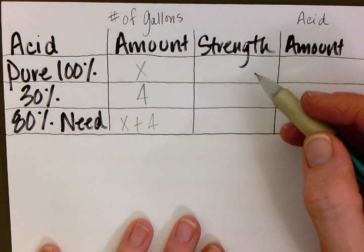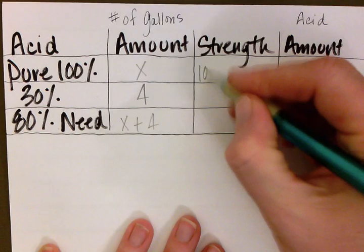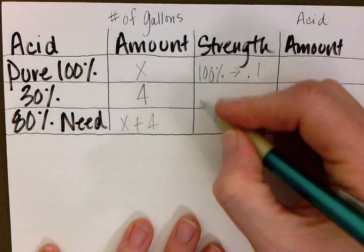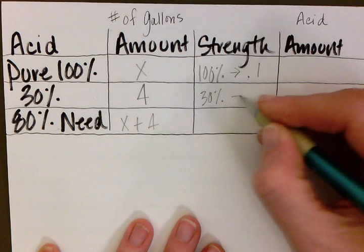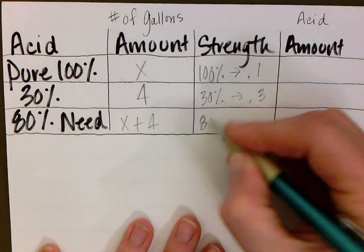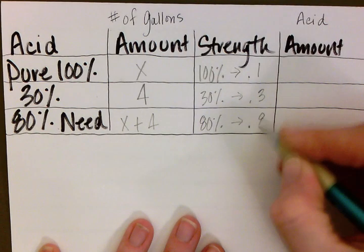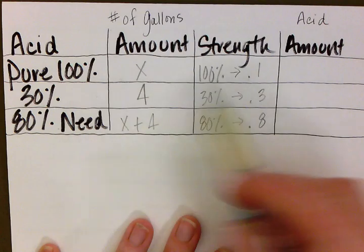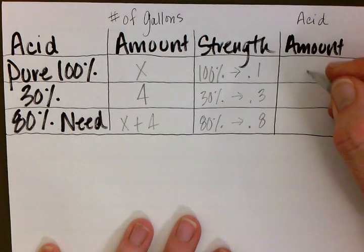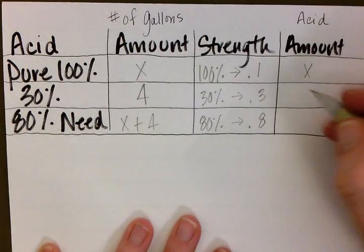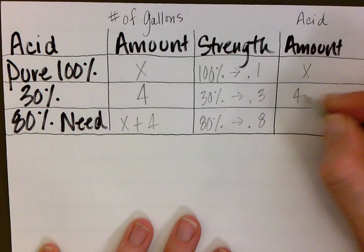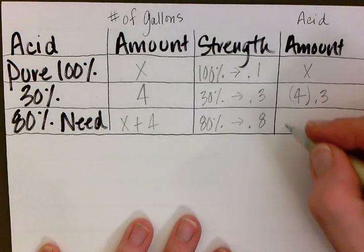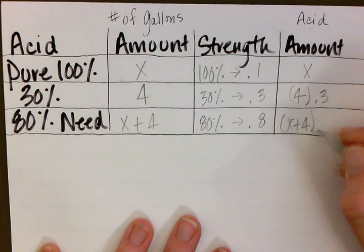For the strength column, we use the percentages as given, converting them to decimals: 30% becomes 0.3 and 80% becomes 0.8. The acid amount in each row is found by multiplying the volume and strength columns together. So x multiplied by 1 is just x. Then 4 multiplied by 0.3, and then x plus 4 multiplied by 0.8.